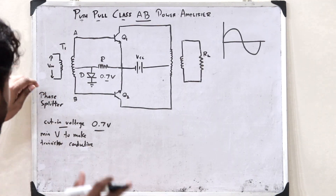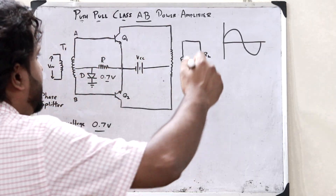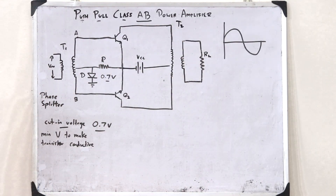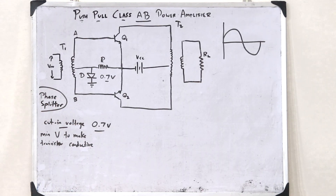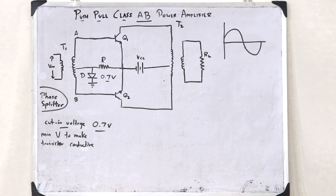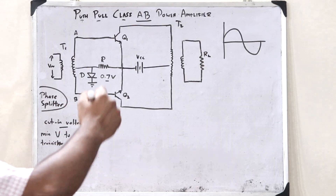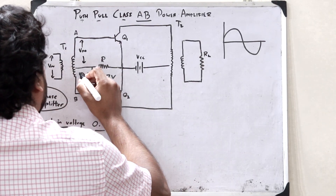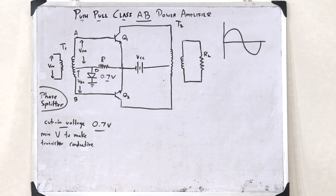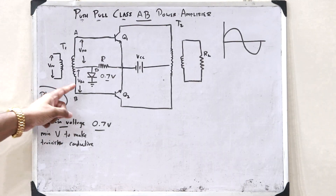We are giving an input signal onto this particular primary transformer. This is a phase splitter. We have two transformers, T1 and T2. T1 is called a phase splitter — it splits the input signal into two halves, where this is one half, VAO, and this is another half, VBO. And VAO is exactly 180 degrees phase shifted with VBO.